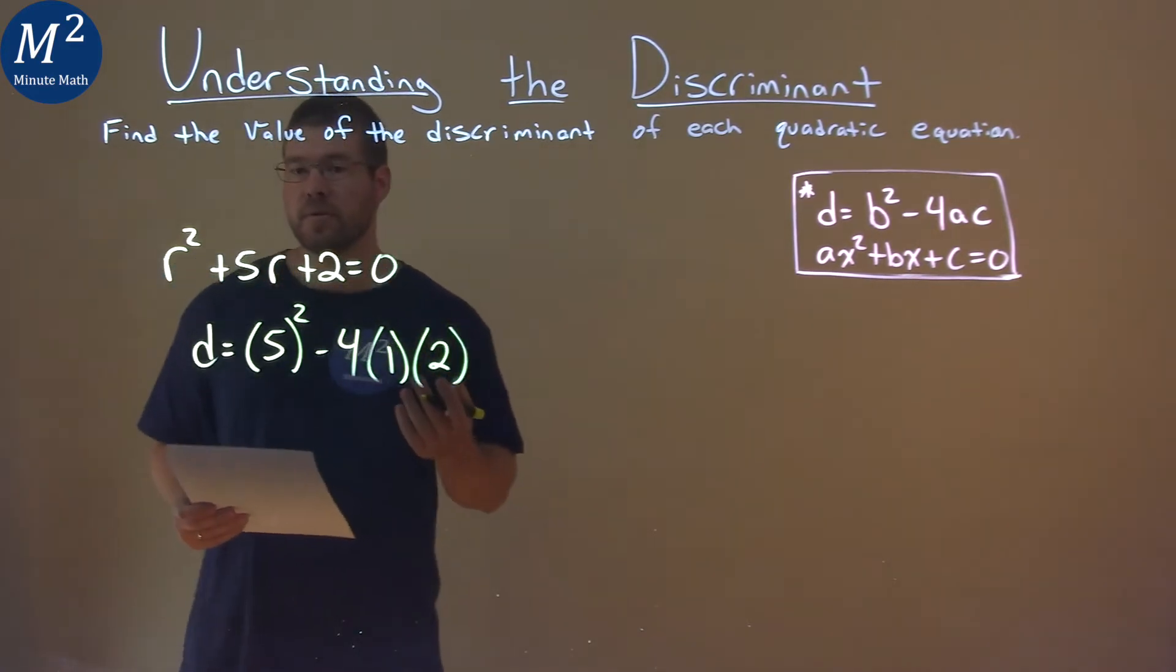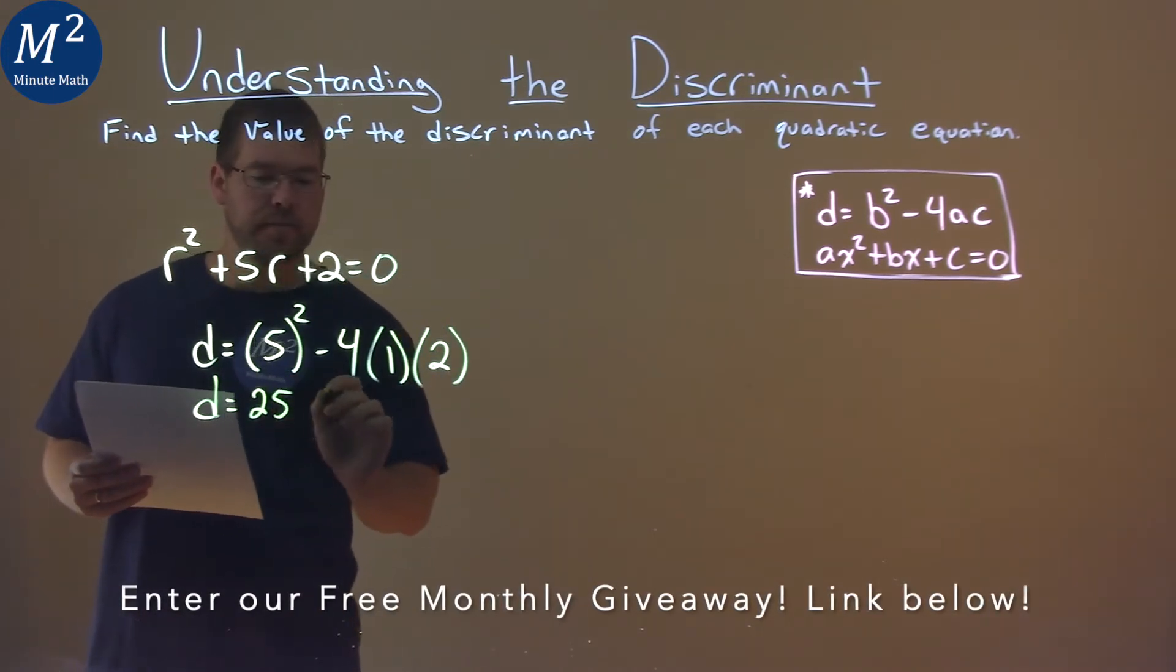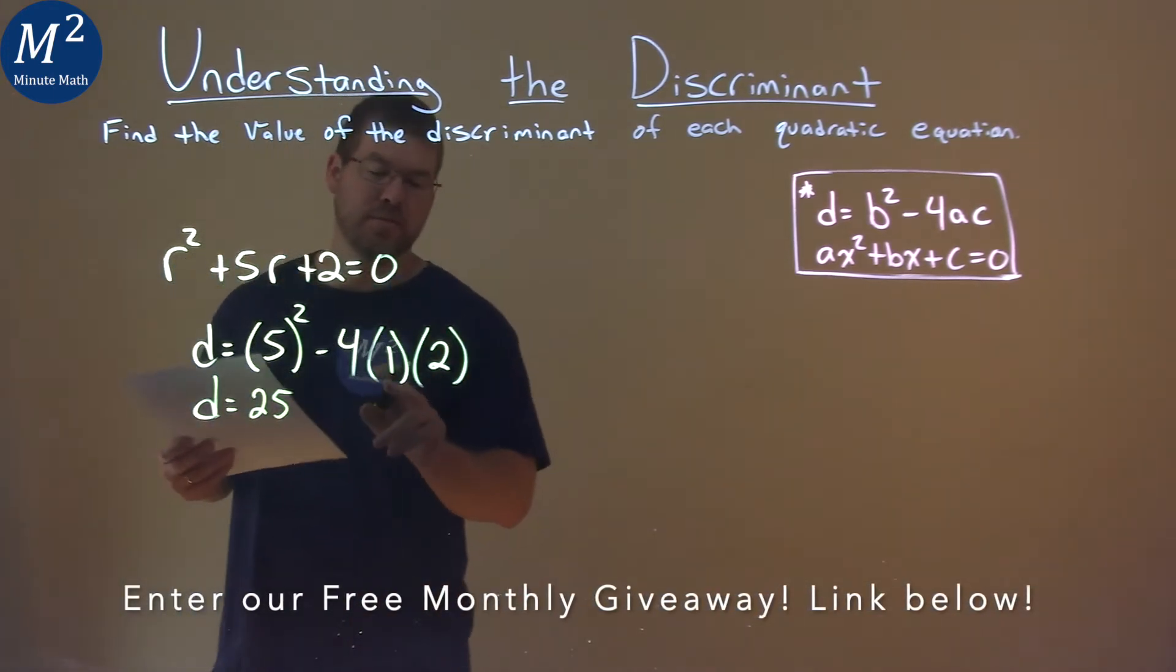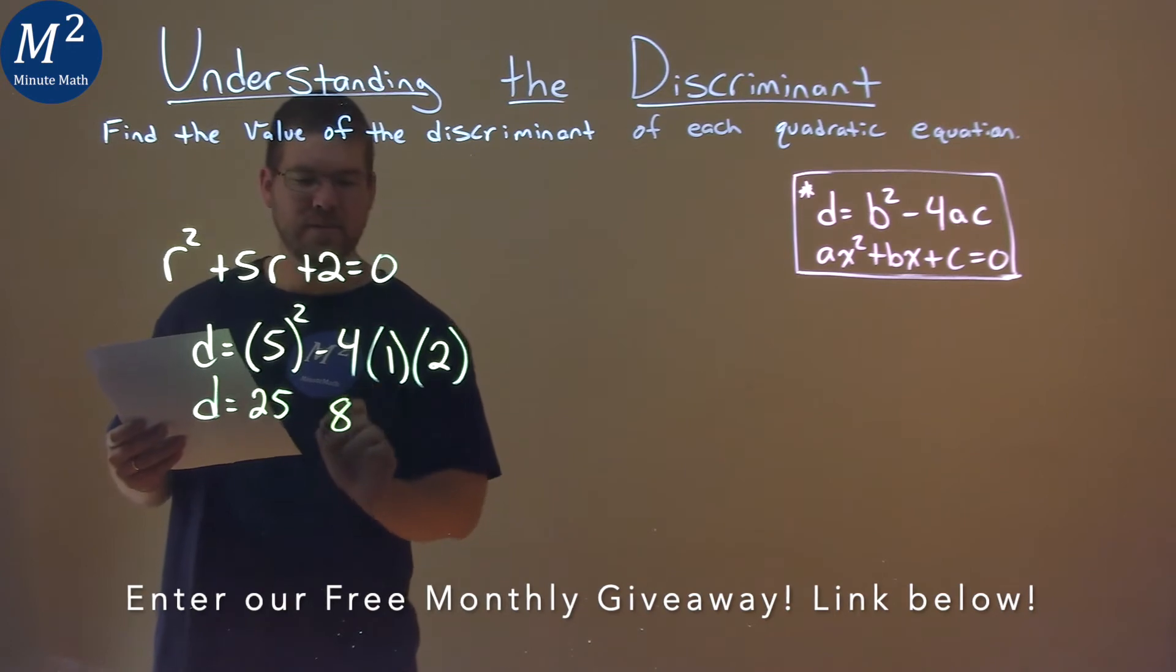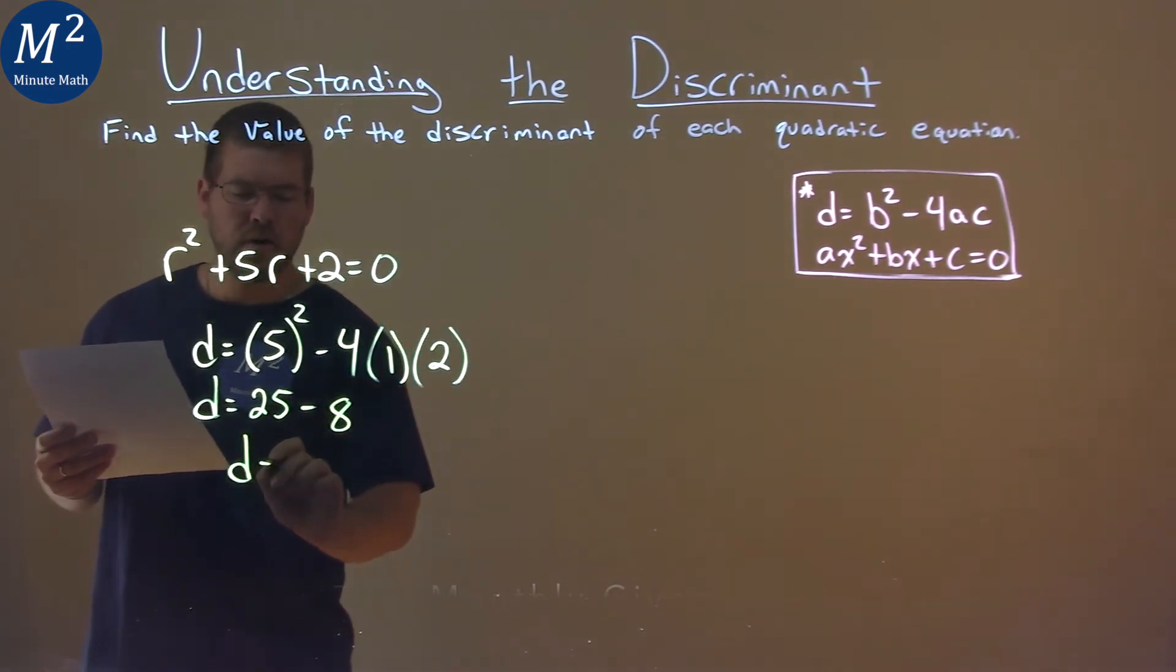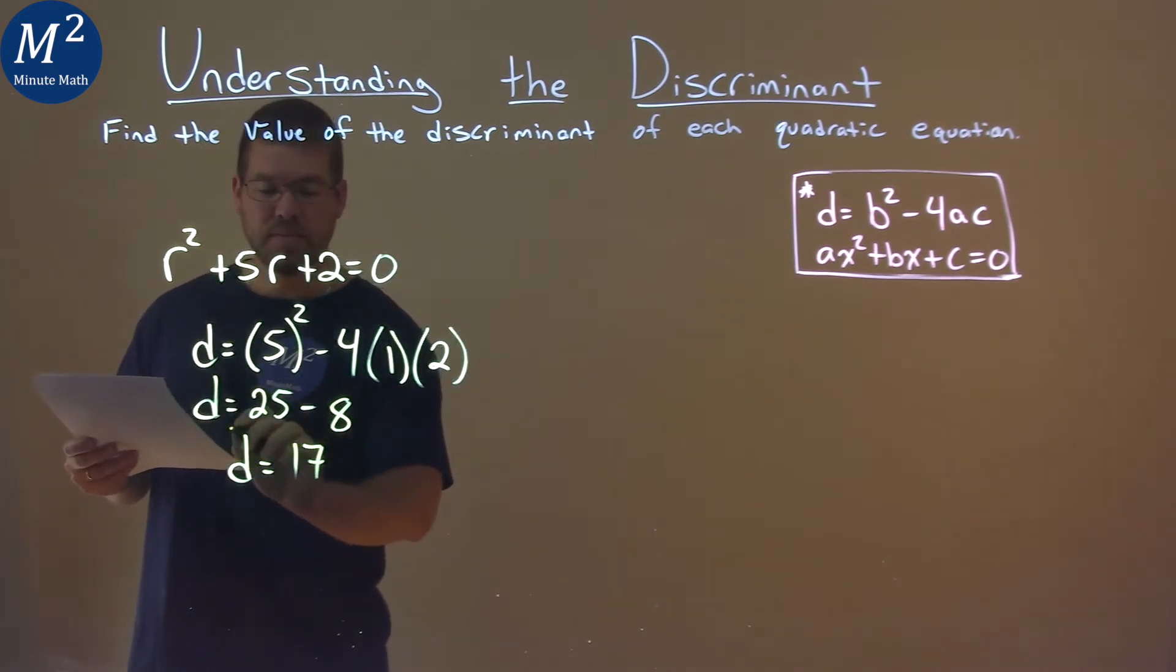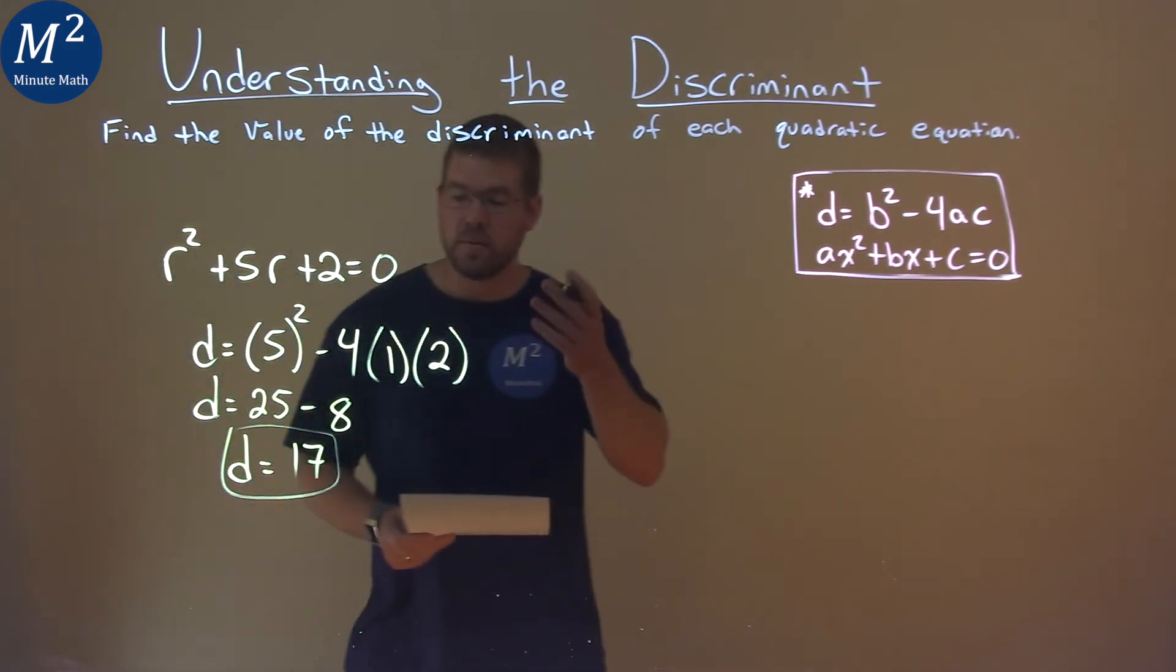And now we're solving. 5 squared is 25, and then 4 times 2 times 1, don't forget that, is 8, and we still have the subtraction going on there. Our discriminant is equal now to 25 minus 8, which is 17, and so our discriminant is equal to 17.